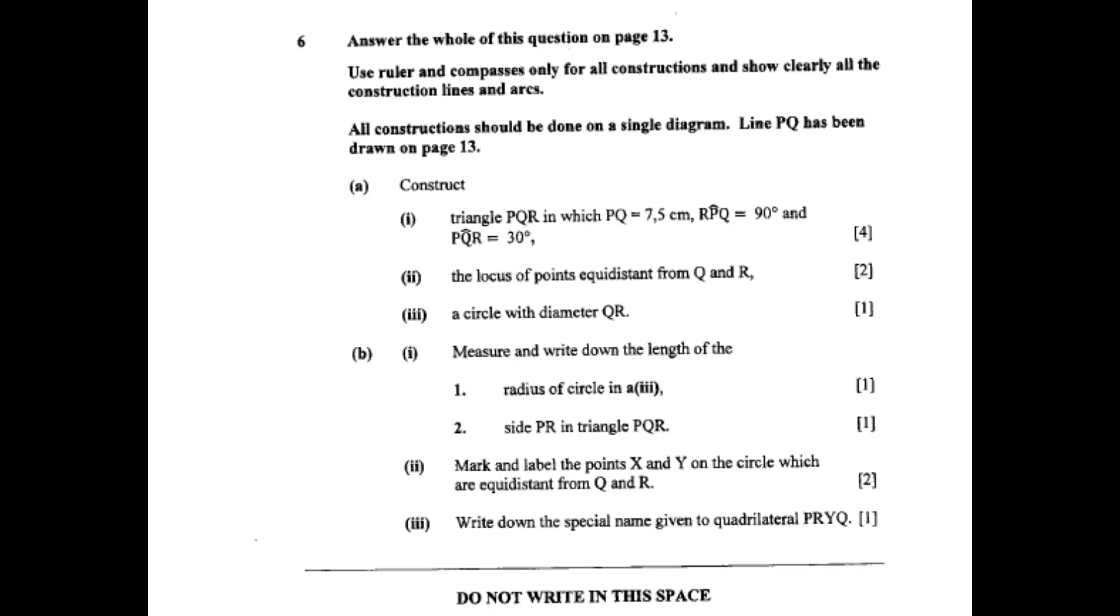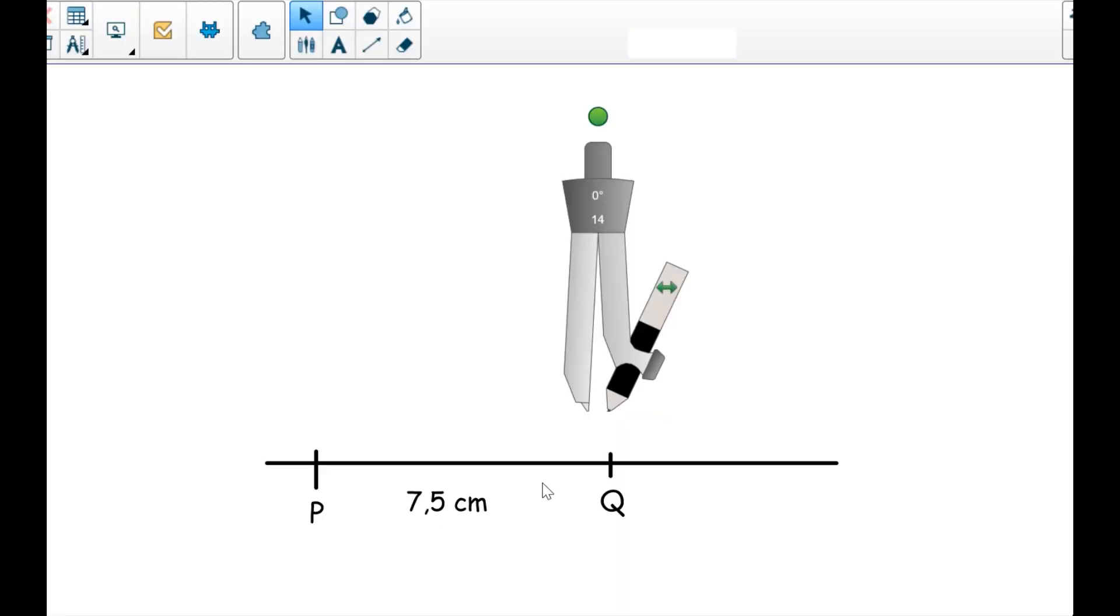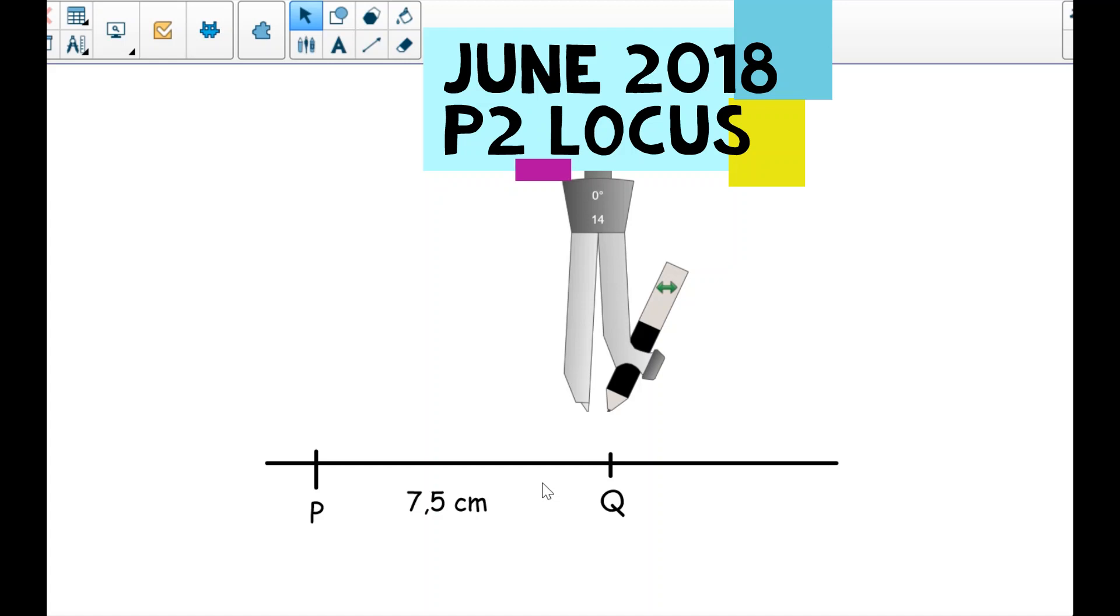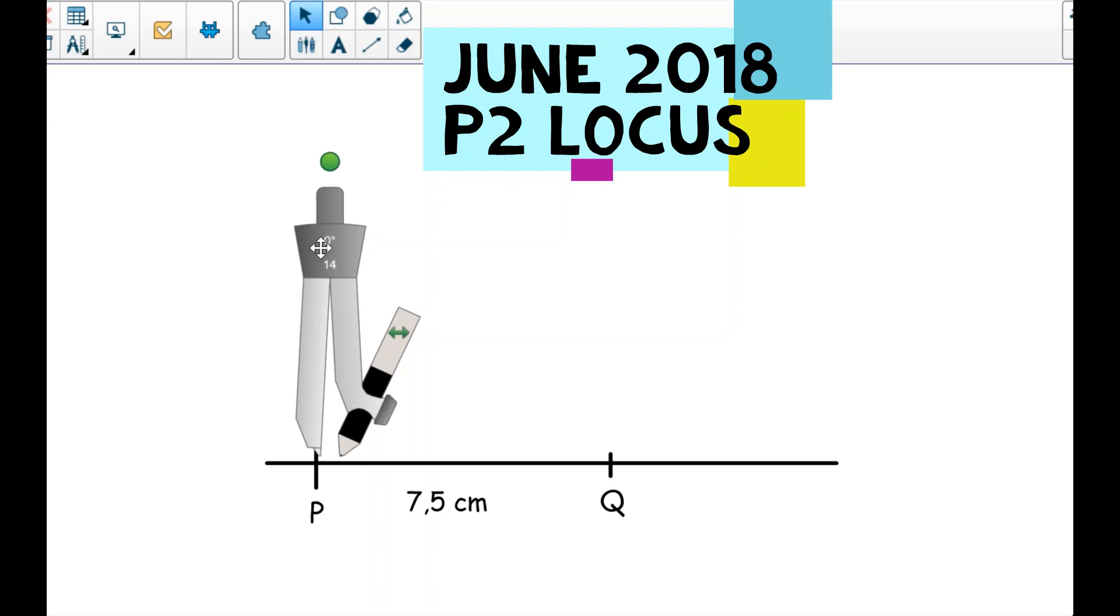The question reads: construct triangle PQR in which PQ is 7.5 cm, angle PQR is 90 degrees, and angle PQR is 30 degrees. I'm going to draw and measure 7.5 cm. Please confirm with your ruler that this is 7.5 cm, and I'm going to construct my 90 degrees here.